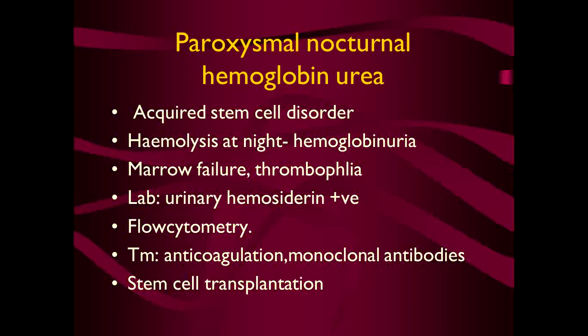On laboratory examination, urine shows hemosiderinuria. Flow cytometry is another test which detects cells and antigens on cell surfaces. Treatment is anticoagulation and monoclonal antibodies, and finally stem cell transplantation.